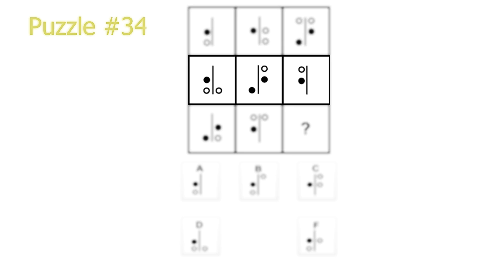Now let's look at the second row and look for patterns there. The first picture already has two white dots. The second picture has one white dot, which is next to a black dot, indicating that there should be a white dot underneath a black dot. The third picture also has a white dot next to a black dot, so there should be a white dot underneath a black dot. We can clearly see how there is one white dot in every position in this row, so the second model holds up as well. Looking at the columns and diagonals, there is a clear indication that these rules are in fact true.